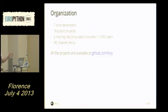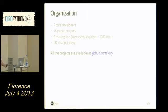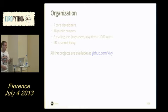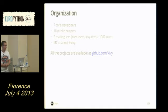Kivy is only the project, but we are an organization — seven people around the world committing regularly on more than 18 public projects. We have two mailing lists: use kivy-dev only if you're working on one of our projects, not just your own application. We have an IRC channel where many people are available every day to help with your issues.